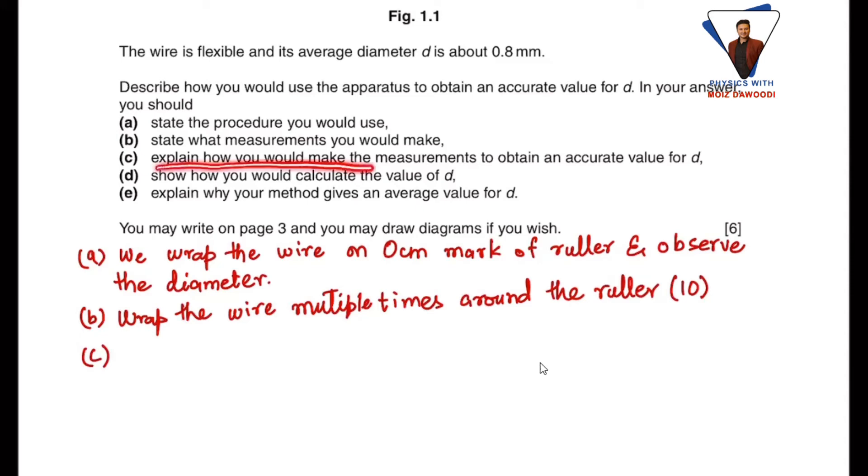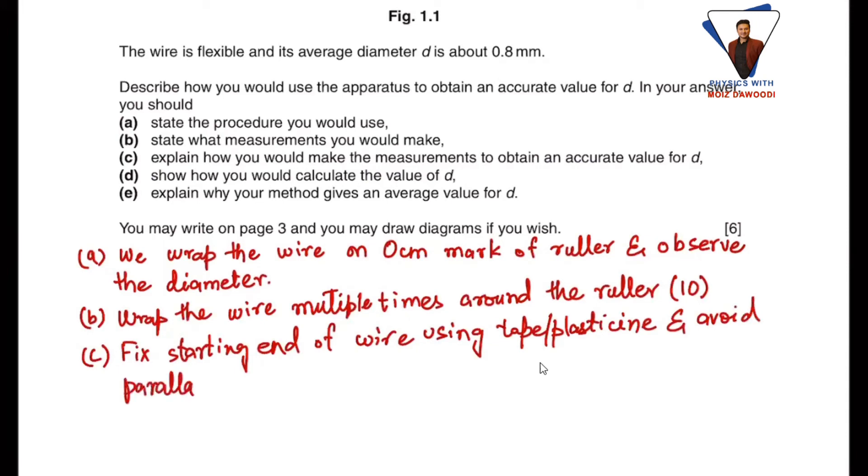Part c: explain how would you make the measurement to obtain more accurate value for d. First we need to fix the starting end of the wire using tape or plasticine, and we need to avoid parallax error.